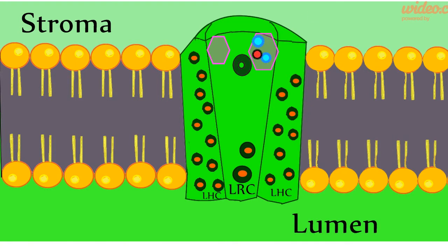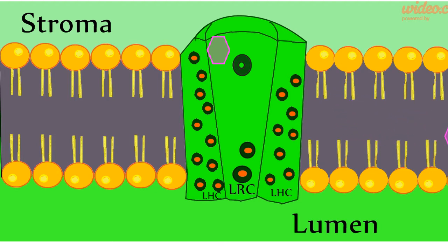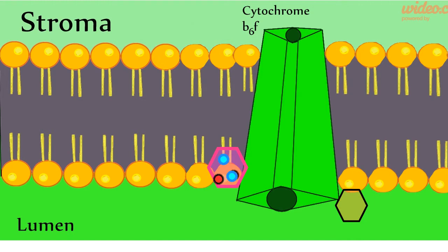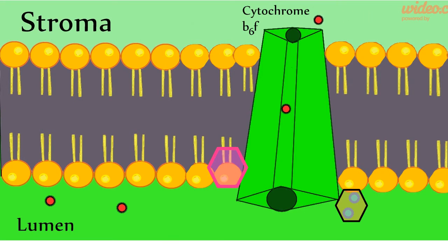Plastoquinone QB picks up two hydrogen ions from the stroma and travels to cytochrome B6F. The hydrogen ions enter the lumen while the electrons travel through cytochrome B6F and then enter the mobile carrier plastocyanin. Cytochrome B6F will pump two more hydrogen ions into the lumen, further creating a concentration gradient between the lumen and the stroma. Plastoquinone QB will travel back to photosystem II, and plastocyanin travels to photosystem I.